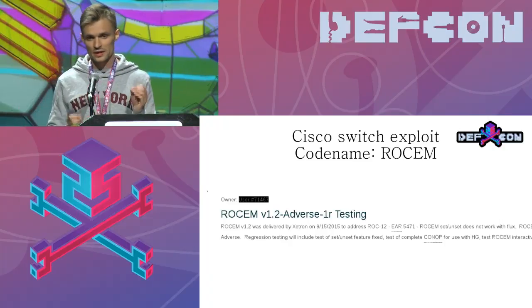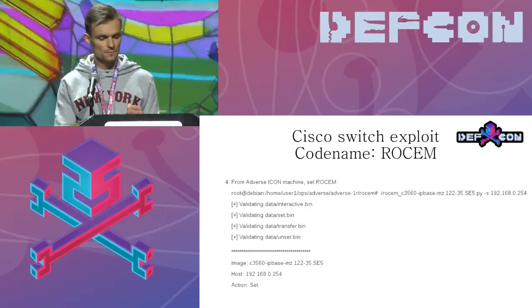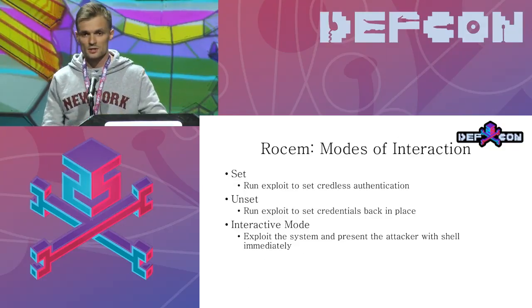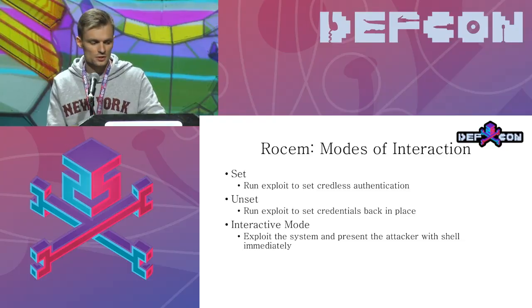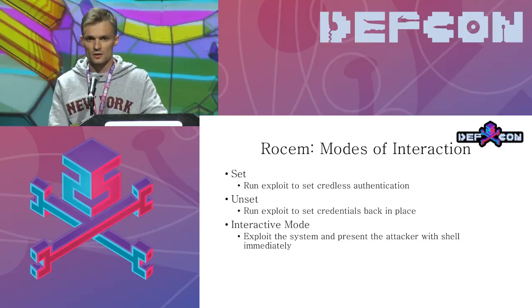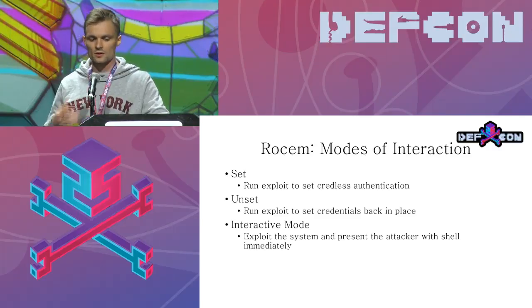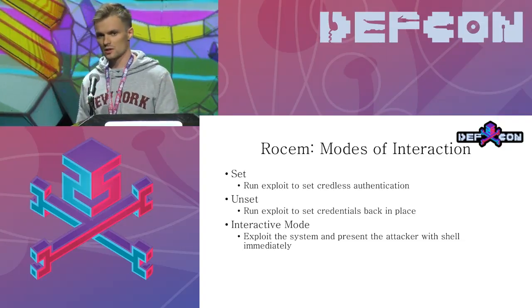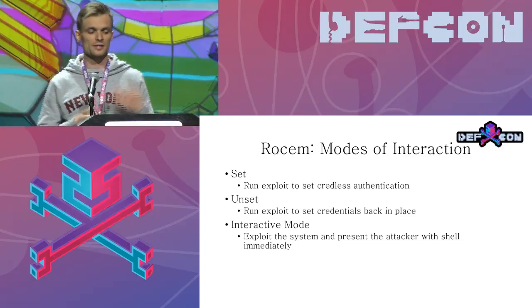The tiny bits of information I got from Vault 7 showed that the exploit works in three modes: set, unset, and interactive. In set mode, a script turns off authentication on the Telnet connection, so all subsequent connections are credential-less and you get a level 15 Cisco IOS shell. The unset mode reverses this. Interactive mode gives you a shell immediately with no subsequent connections affected. This is my guess from the Vault 7 pages — I don't know exactly how it worked.